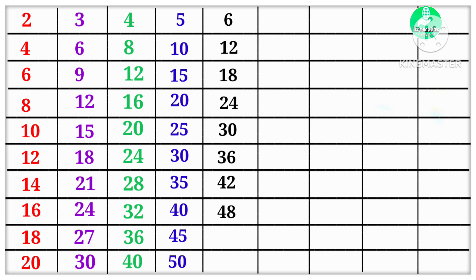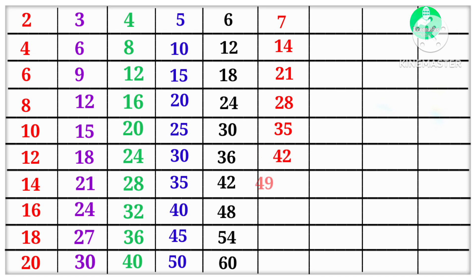6 8s are 48, 6 9s are 54, 6 10s are 60. 7 1s are 7, 7 2s are 14, 7 3s are 21, 7 4s are 28, 7 5s are 35, 7 6s are 42, 7 7s are 49, 7 8s are 56, 7 9s are 63, 7 10s are 70.